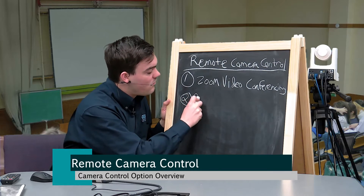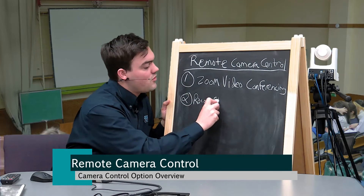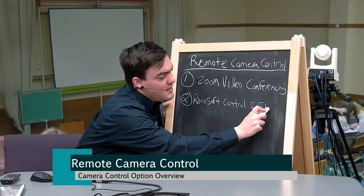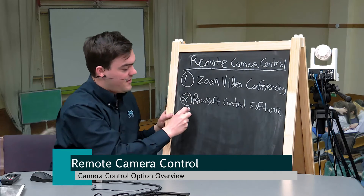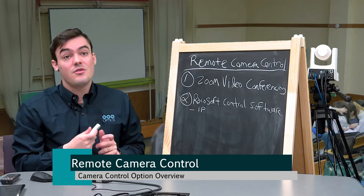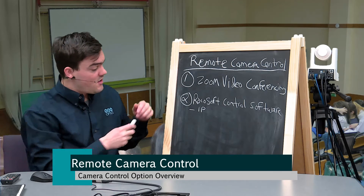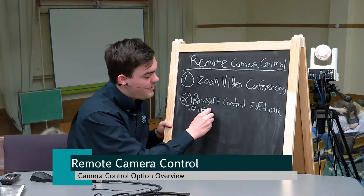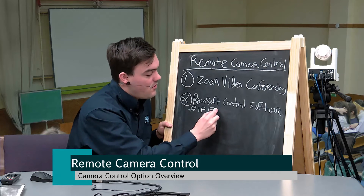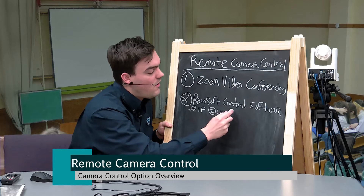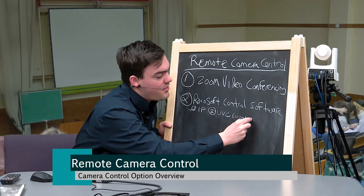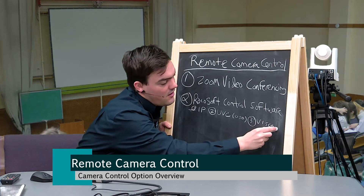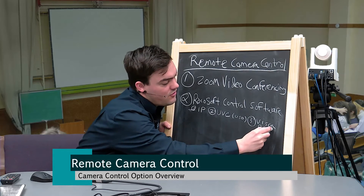Number two is our Rokosoft control software, which has three different major parts. One, we can control over IP — that's over the network Ethernet port. Two is called UVC, which is the protocol we use for USB cables. And three, we can use VSCA, which uses the RS232 port.